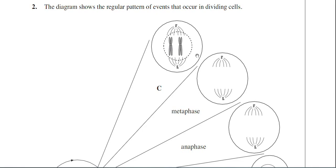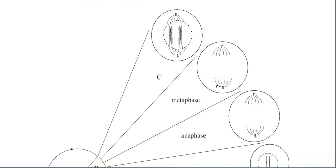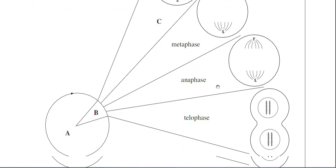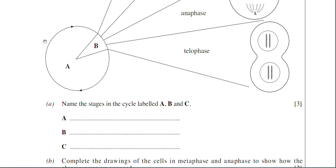We're on to question number two now in the June 2009 BY-1 paper. This is a question on cell division. The examiner's drawn a diagram here for us. This diagram is of the cell cycle basically.